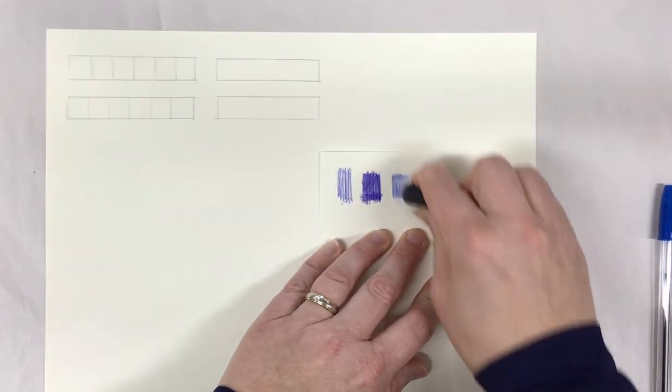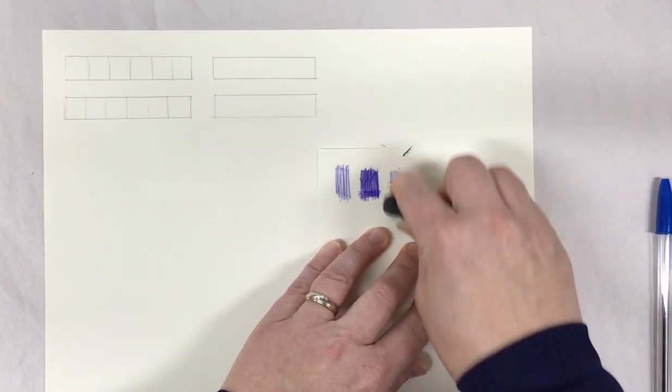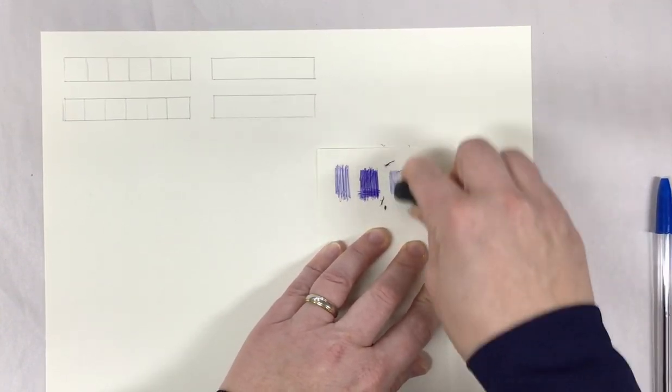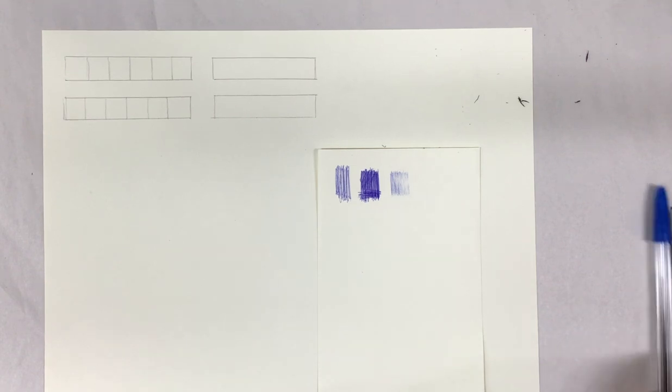I've also found that I can lighten a little bit by using an eraser. So if I accidentally went too dark, notice how I was able to erase away some of it. So that is a trick too that I've learned in recent years that I didn't know I could do.